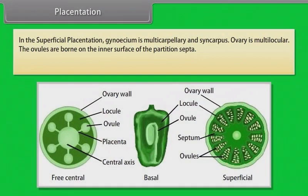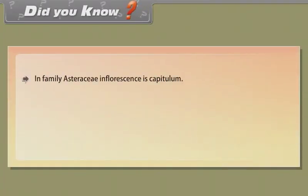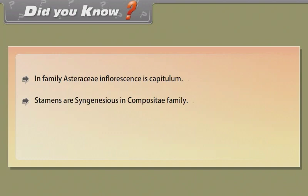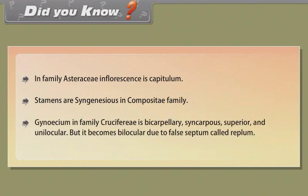In superficial placentation, gynoecium is multicarpellary and syncarpous, ovary is multilocular. Ovules are born on the inner surface of the partition septa. Example: Nymphaea. In family Asteraceae, the inflorescence is capitulum and stamens are syngenesious. In family Cruciferae, gynoecium is bicarpellary, syncarpous, superior, and unilocular, but becomes bilocular due to a false septum called replum.